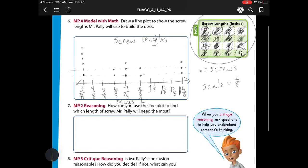So now on to question number 2. It says, how can you use a line plot to find out which length of screw Mr. Polly needs the most? He needs more 3 eighths because there are more dots. So he needs more 3 eighths, or those smaller inch screws, because there are more dots than anywhere else on the number line.